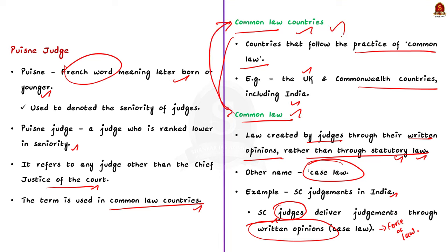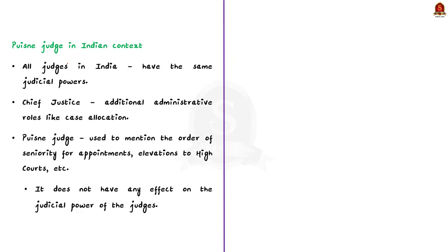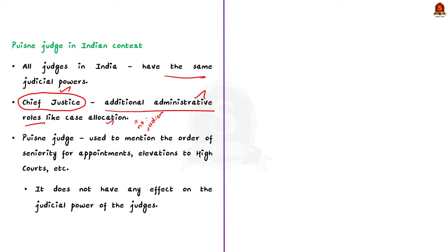In these common law countries only, the term puisne judge is often used. In India, all judges have the same judicial power. But the senior most judge of the court, that is the Chief Justice, has some additional administrative roles like case allocation. This is just an extra administrative role and not extra judicial power. So in India, the term puisne judge is used only to mention the order of seniority for appointment, elevation to high court, etc., and it does not have any effect on the judicial power of the judge.